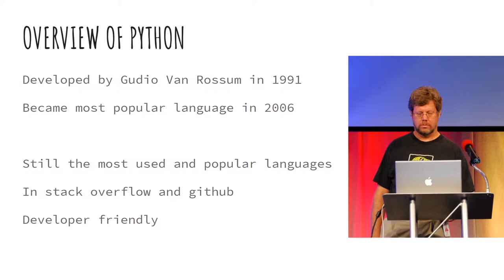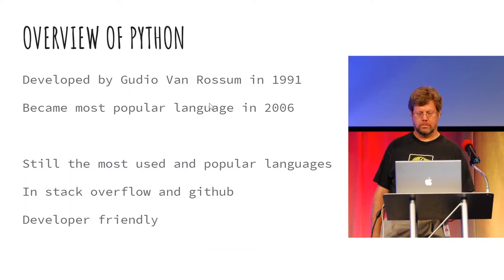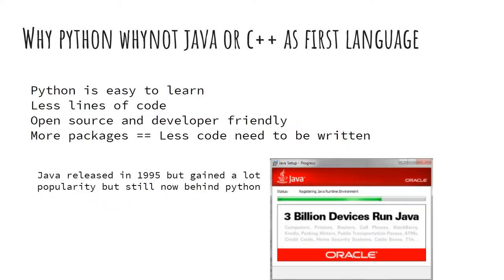Python is a developer-friendly language. You can learn Python code in two days — that's a great deal. If you take C++ or Java, you need a minimum of 10 days to master it. That's the difference.